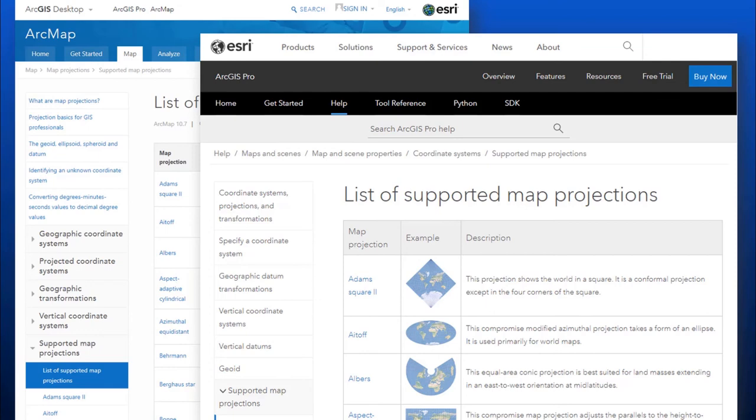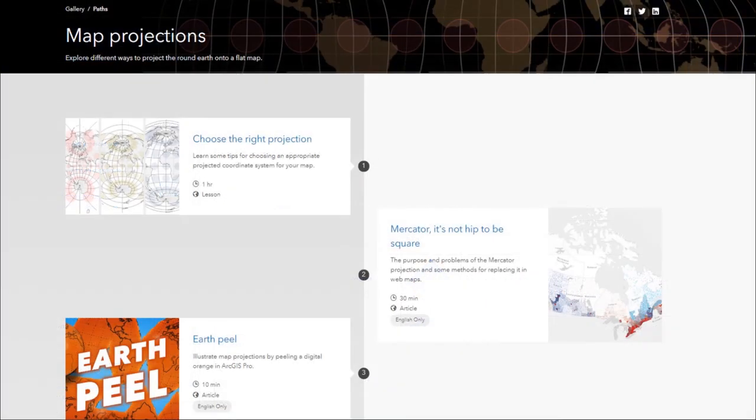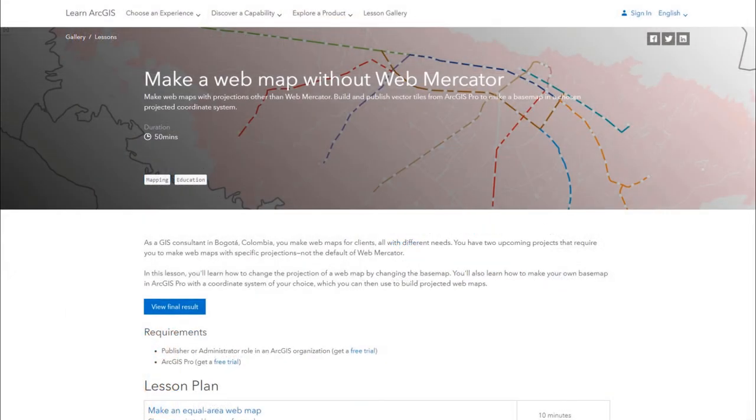The LEARN team, which is learn.arcgis.com is their website. One of our colleagues, Heather Smith, has put together a LEARN path where she's put together a couple different lessons, talking about map projections and trying to get people to become more familiar with them. So for instance, this is the LEARN path for map projections. There is choose the right projection. Mercator, it's not hip to be square. And earth peel. So what happens when you peel a digital orange in the different projections. There's also a later lesson called make a web map without Web Mercator, which is really interesting. You do not have to use Web Mercator in your base maps or in your web maps. And this shows you how to do that.